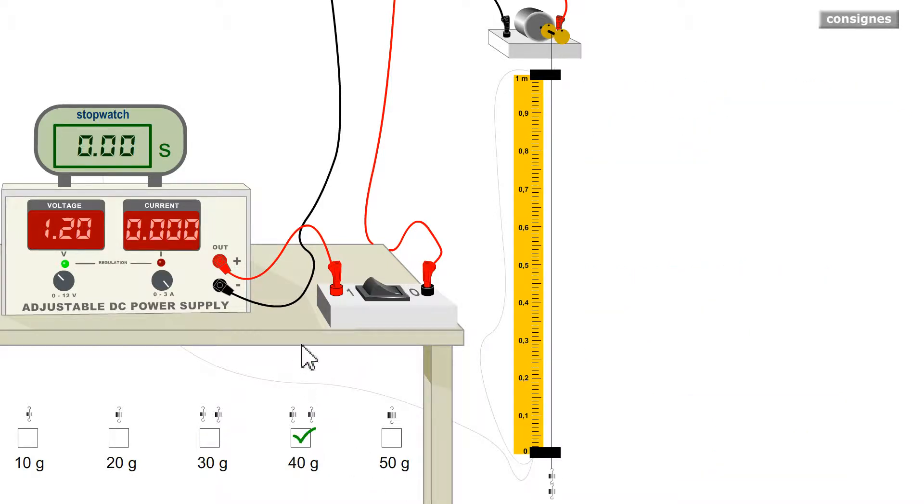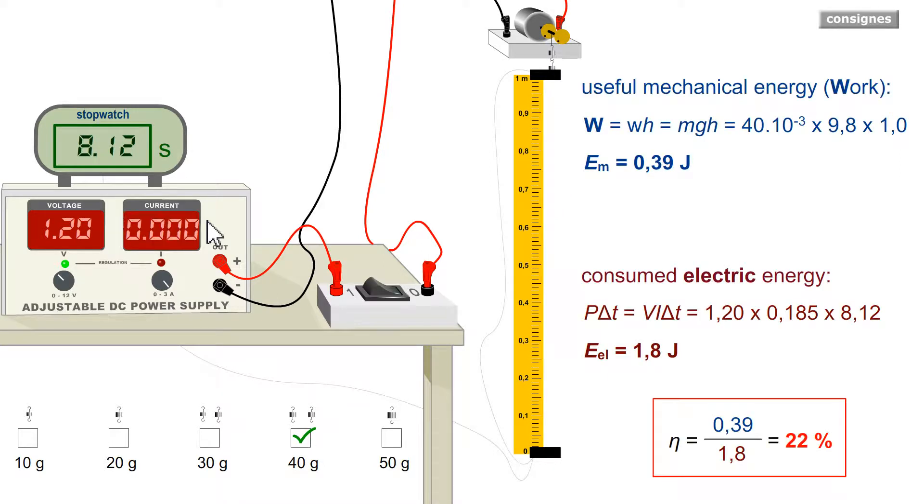For 40 grams, I note in amperes of course, making sure to have joules, that each quantity here is written in the international system. I have to be homogeneous.